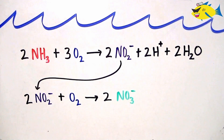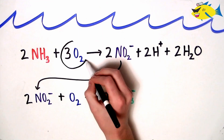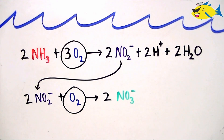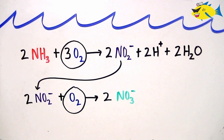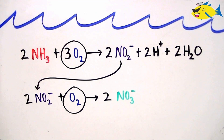Looking back at our first depiction of nitrification, we observe that oxygen is required for this process to occur. It turns out that the ability for beneficial bacteria to detoxify ammonia is limited by the concentrations of available oxygen. This is just one of the reasons why it's really important to have good aeration throughout your aquarium and your filter.